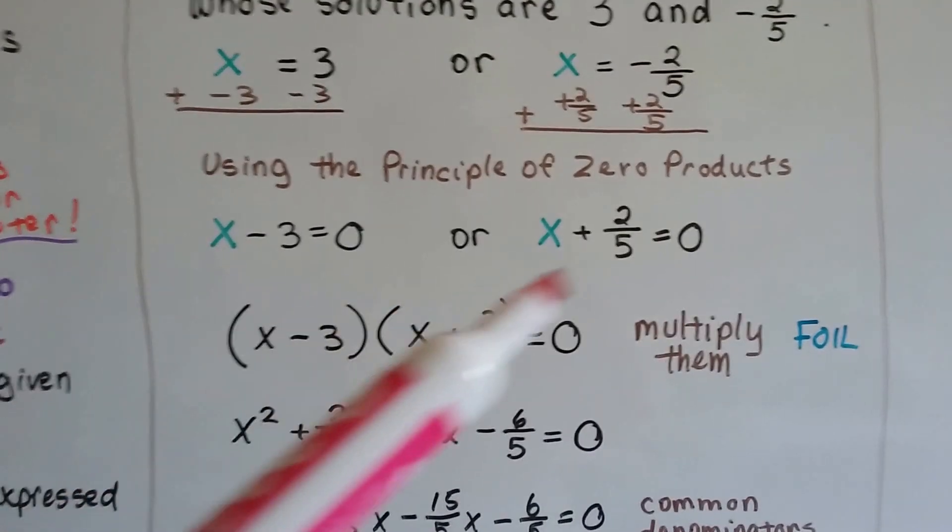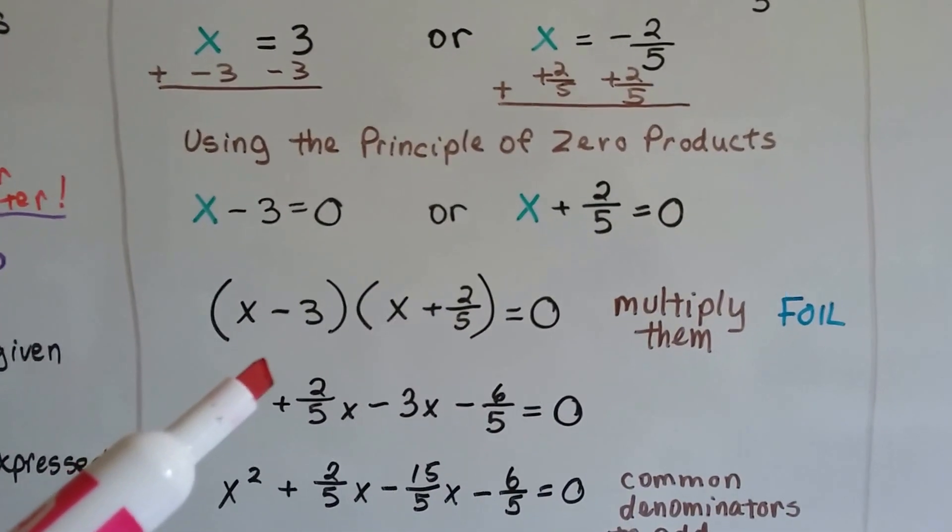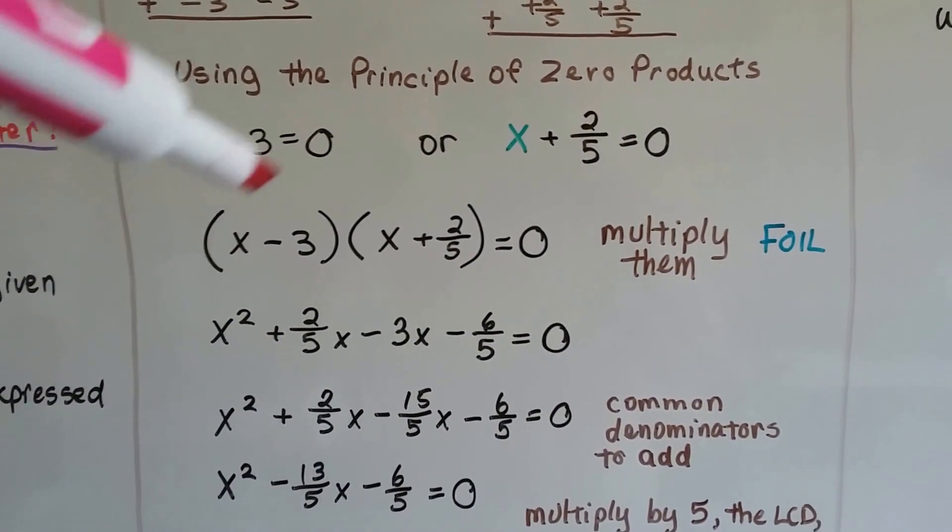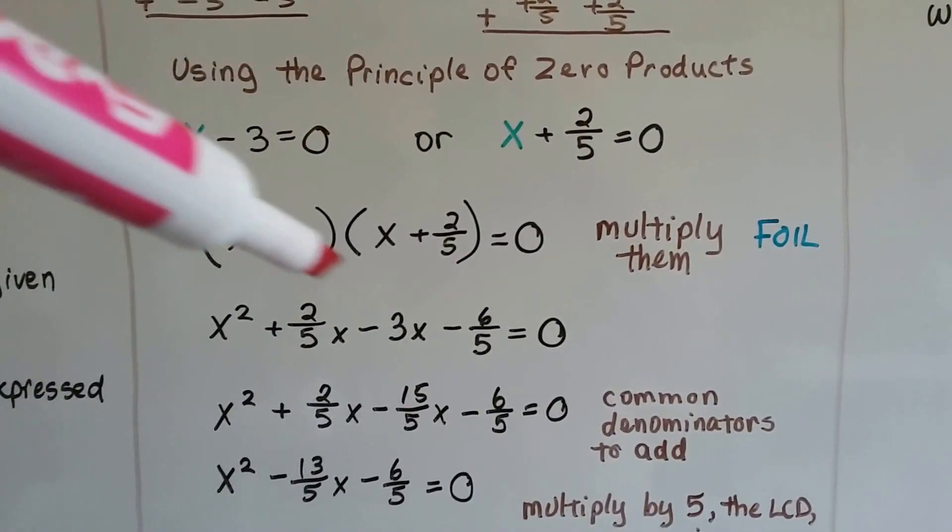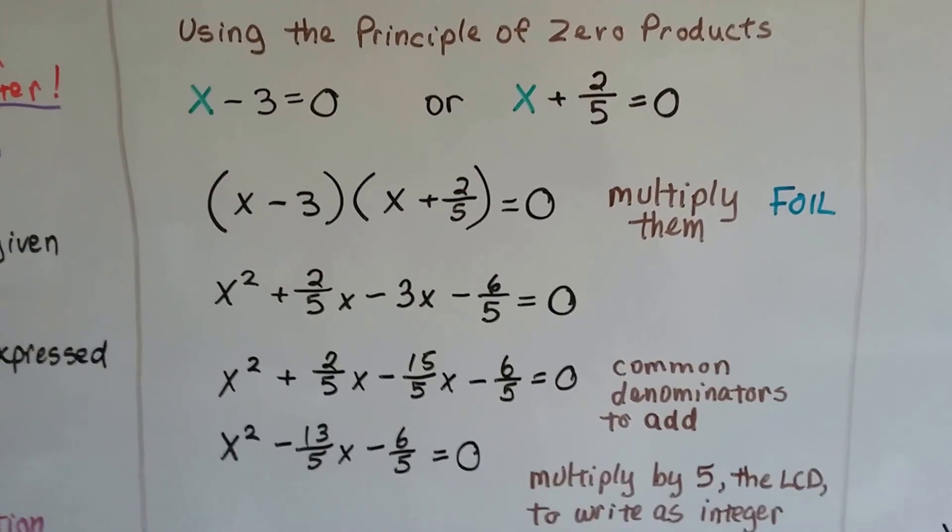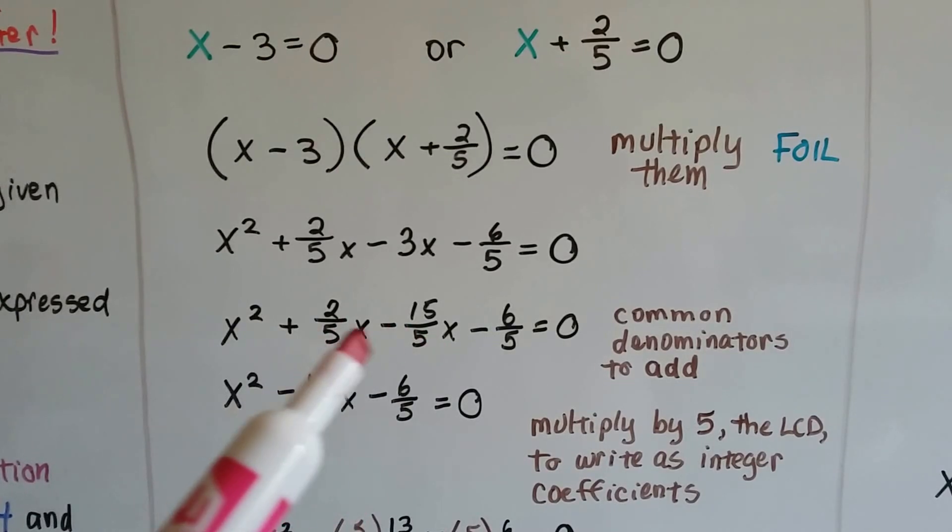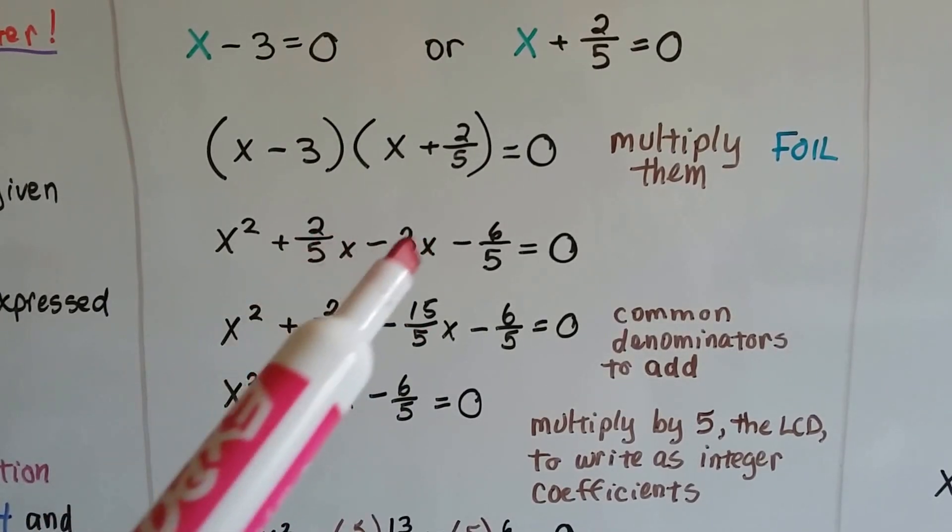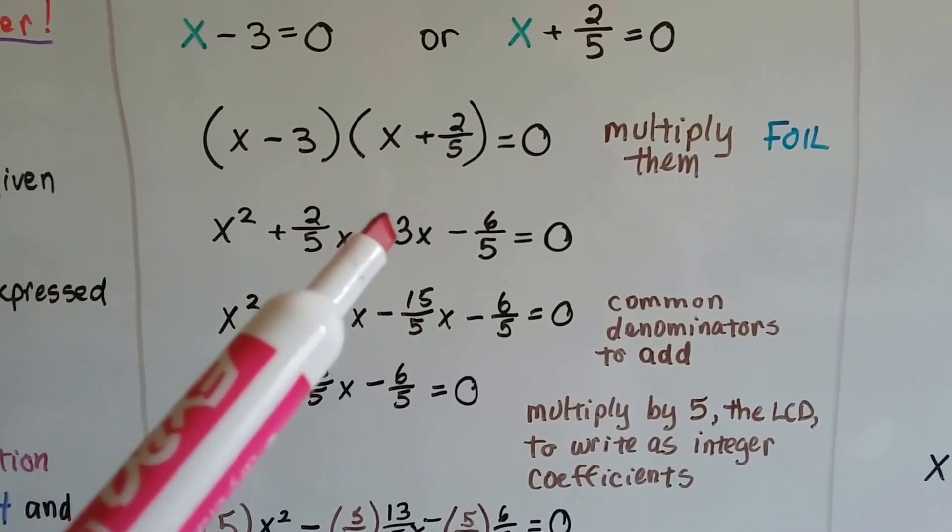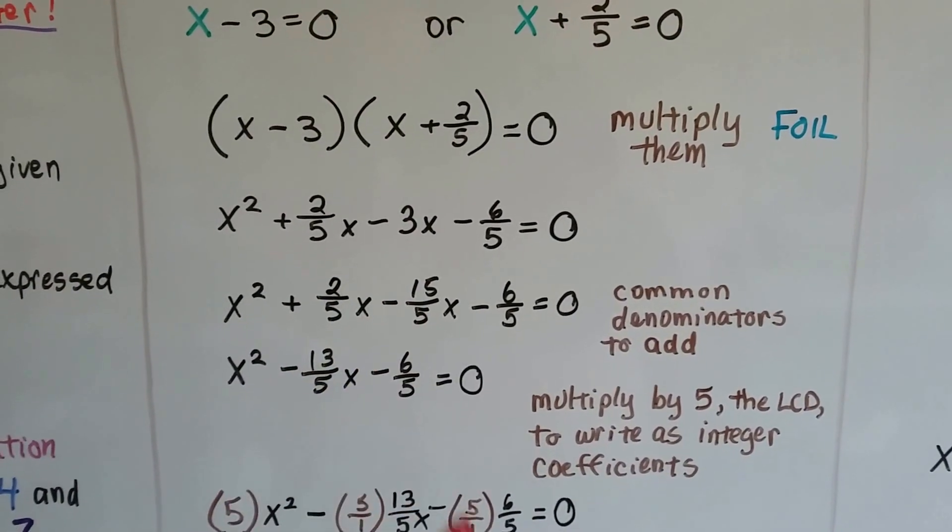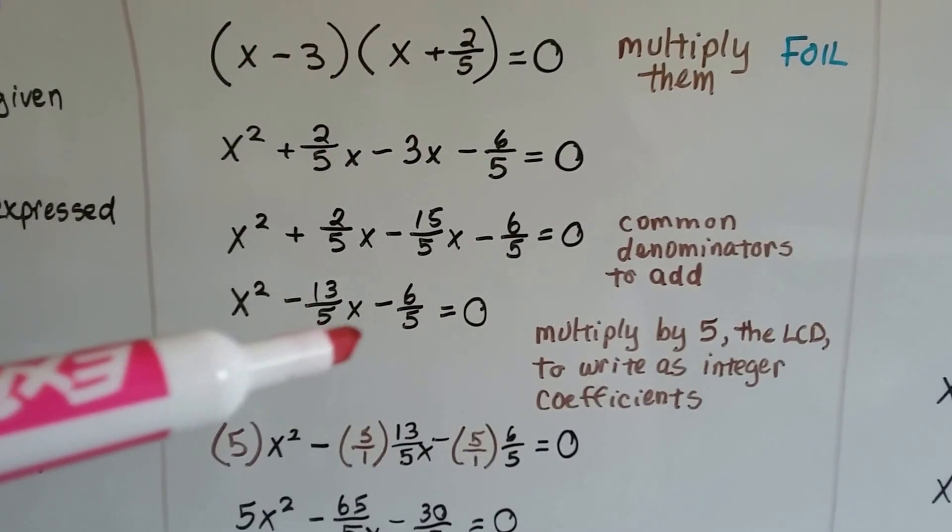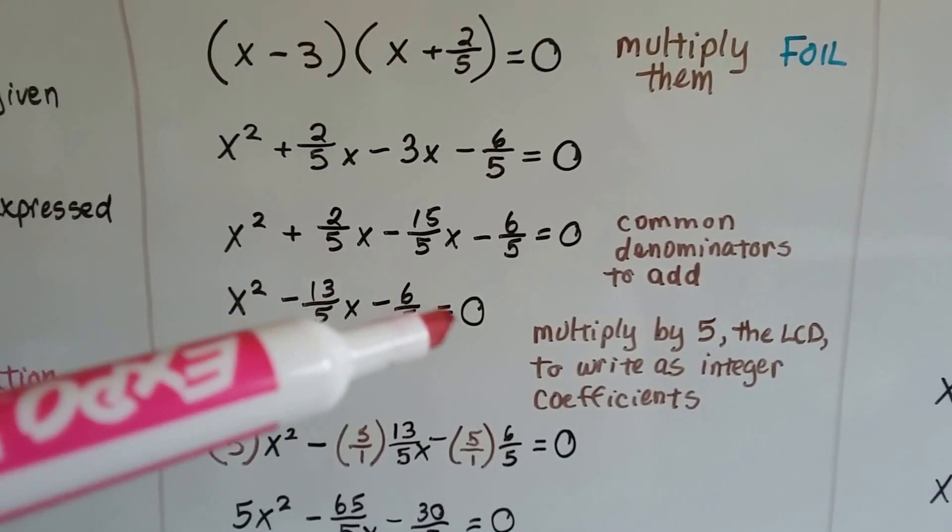Now that we've got these two, we can multiply them using FOIL. So we get x² + (2/5)x - 3x - 6/5 = 0. We need a common denominator to combine like terms, so we set it at 5. We multiply that 3 by 5, which is 15/5 now, and we get x² - (13/5)x - 6/5 = 0.